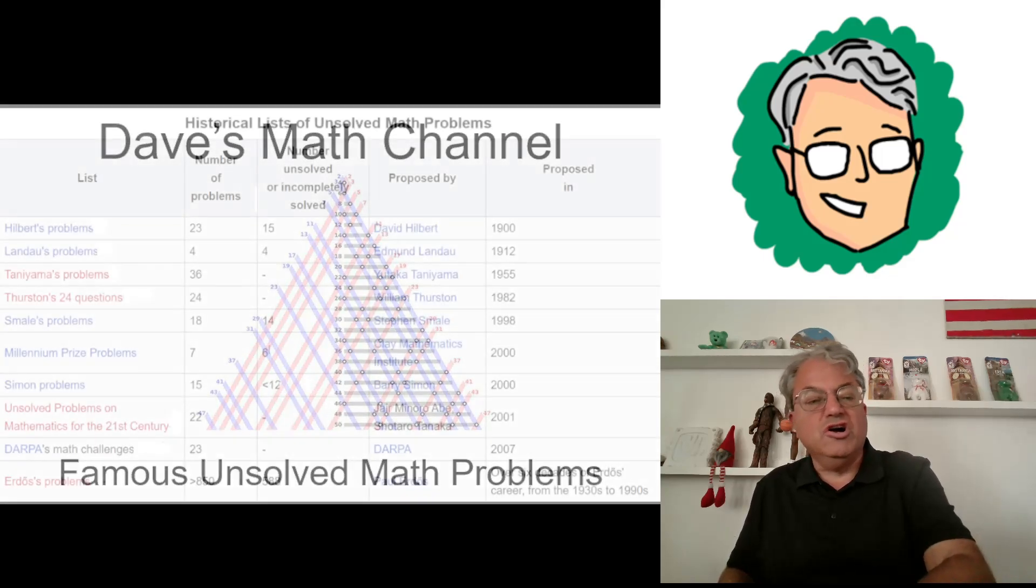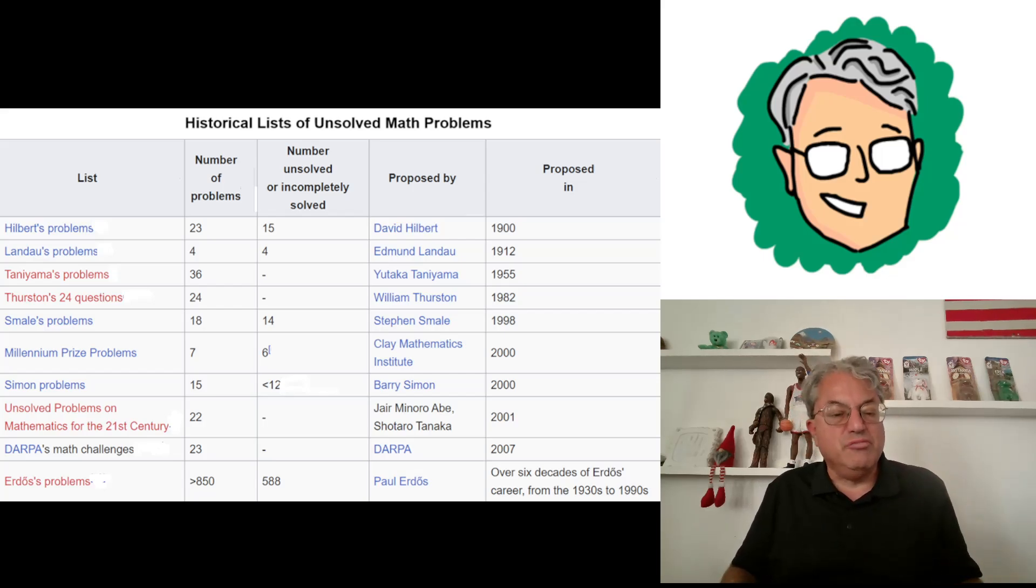Here's a list of some compilations of what various mathematicians have considered lists of famous unsolved problems at the time. Some have been solved since these lists were made. The first list is very famous. This was done by David Hilbert in 1900, known as Hilbert's Problems. He came up with 23 most important unsolved problems in mathematics, and 15 of them are still either completely unsolved or partially unsolved.